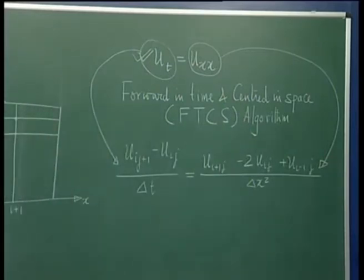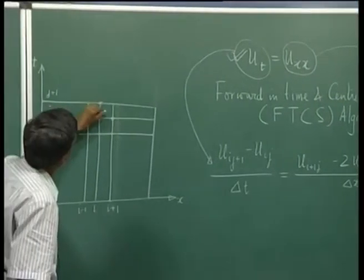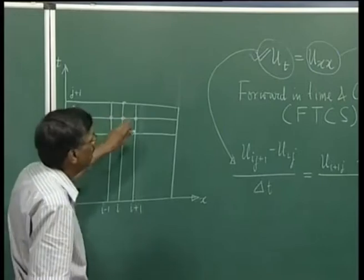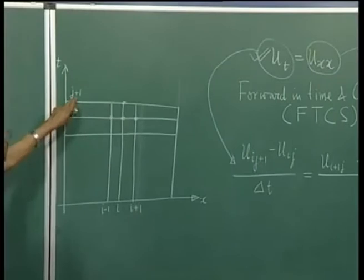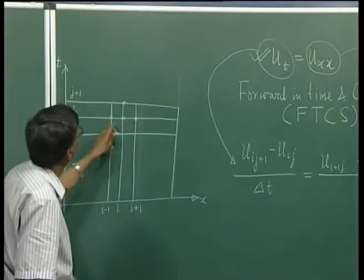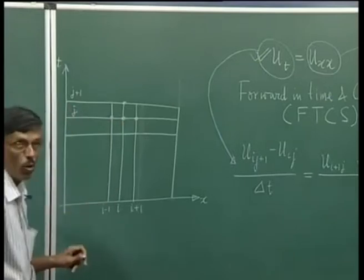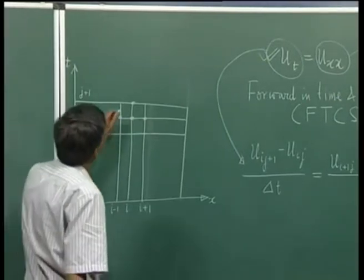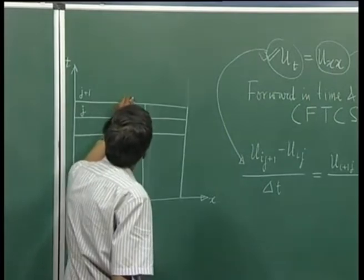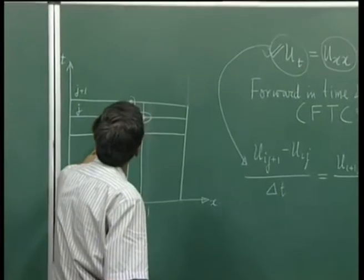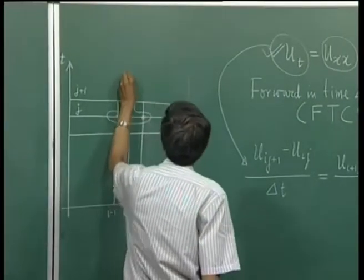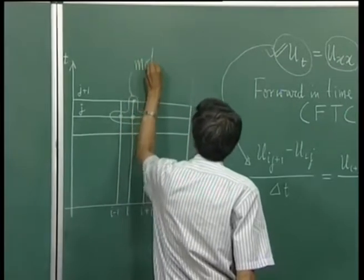Having done that, we note that the points involved in this algorithm are given here by these dotted points — that is u_{i,j+1}, which is at the advanced time level j+1, depends on three other points on the line below. In the language of computation, these participating node points constitute what is called the computational molecule.